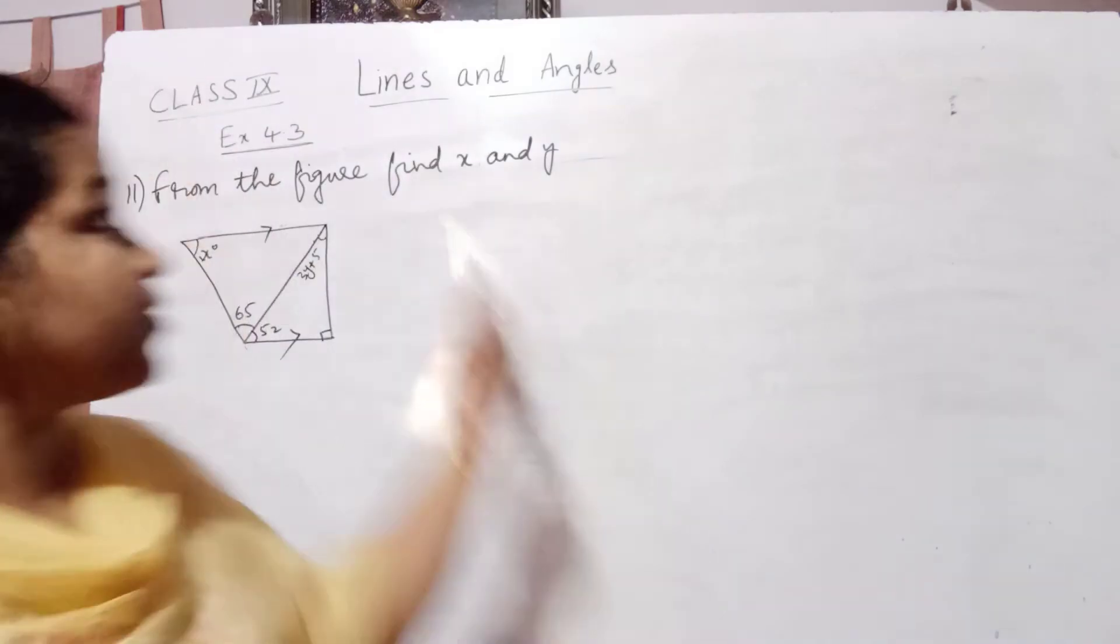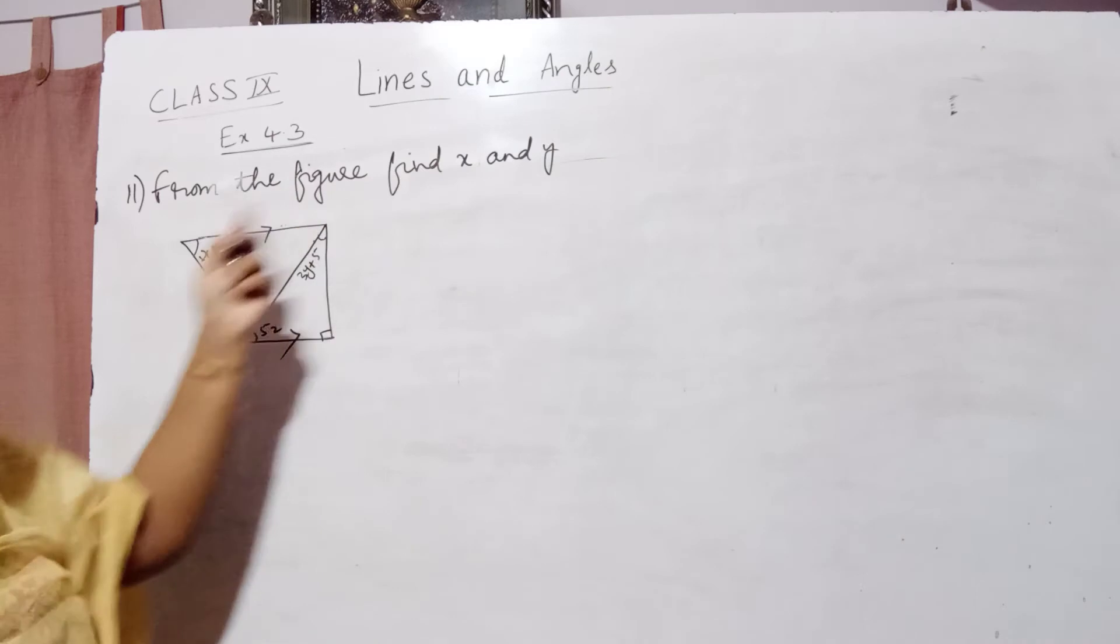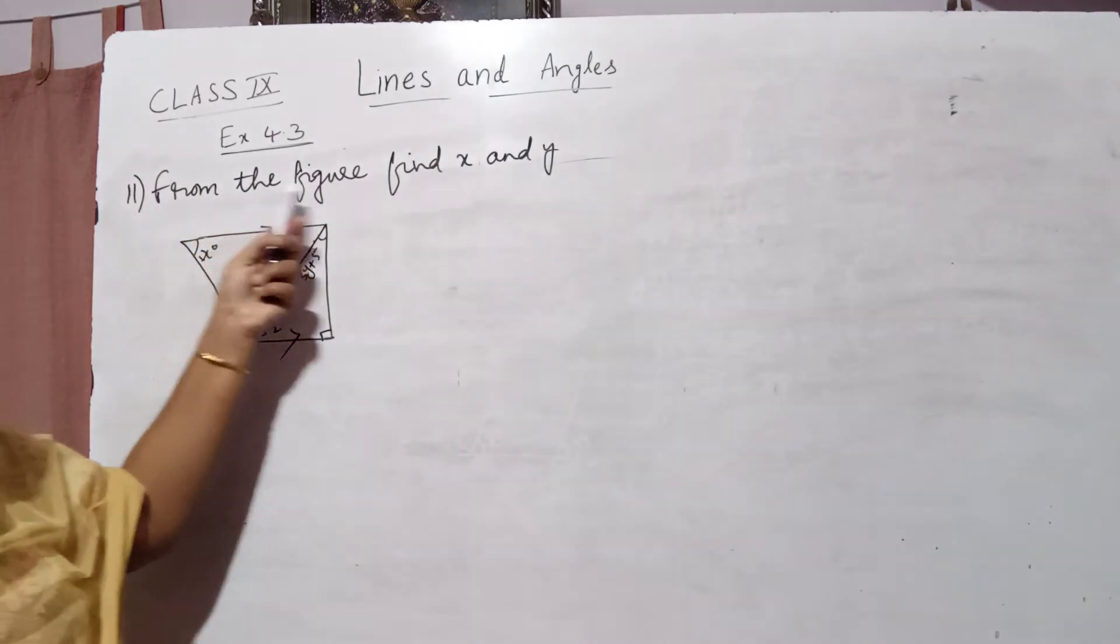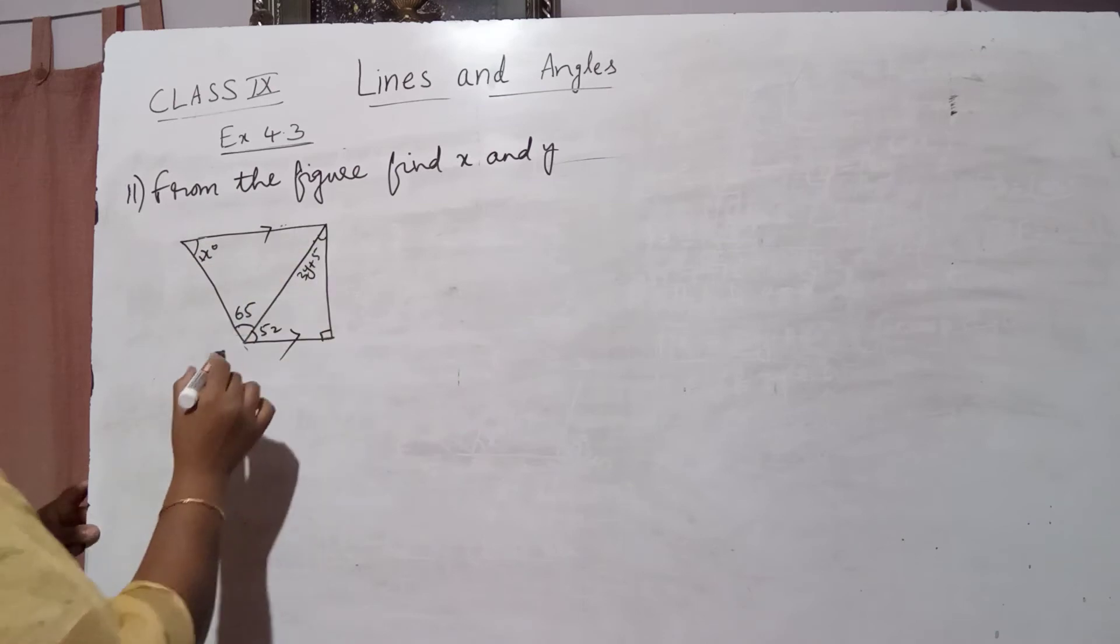Students, here in Lines and Angles of Class 9, Exercise 4.3, the 11th question is: from the figure, find x and y. So here this is the figure given. Arrow marks show that these two are parallel.